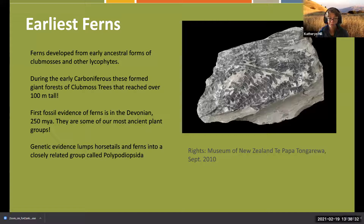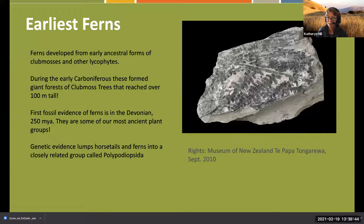Ferns were the first things to evolve vascular tissue. They get stems, actual differentiated leaves, and they get roots, which is really important for getting taller.